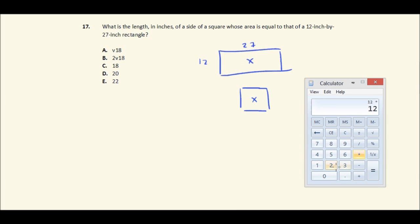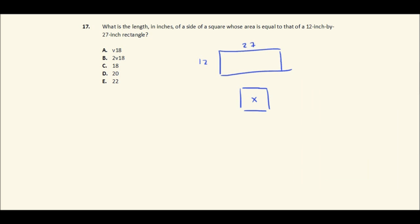So just take 12 times 27, and that's 324. Alright, well, if I plug in 324 here and 324, so that means our square and the rectangle, but the square has an area of 324.